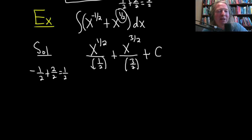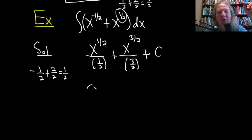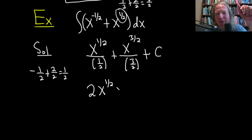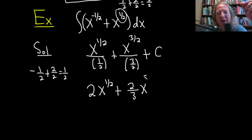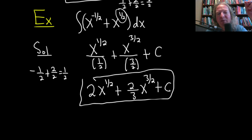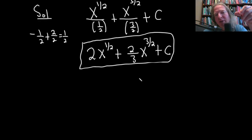We have two division problems. Dividing by 1/2 is the same as multiplying by 2, so this becomes 2x to the 1/2, which you can also write as the square root of x. Dividing by 3/2 is the same as multiplying by 2/3, so that term becomes 2/3 times x to the 3/2, plus C. That's an acceptable answer, though this isn't the approach I'd typically take — let me show a shortcut.